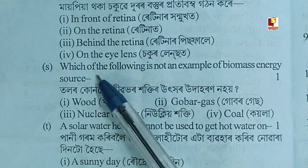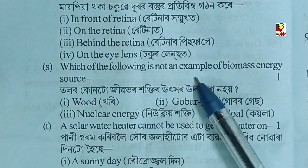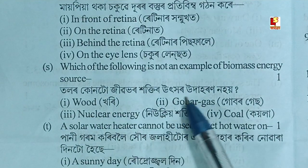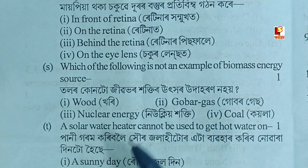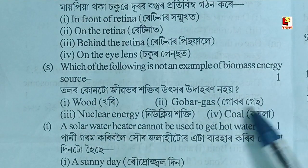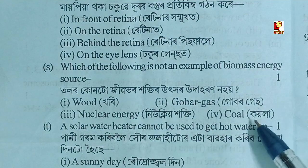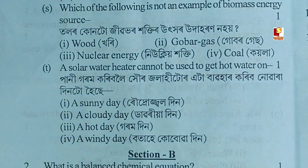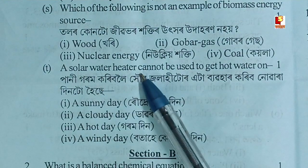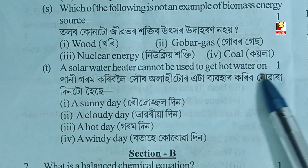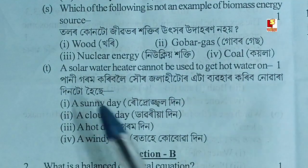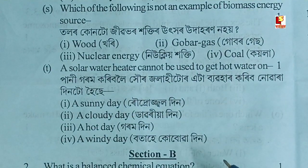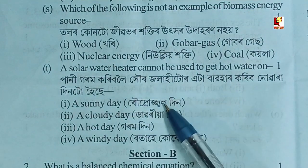Which of the following is not an example of a biomass energy source? Options include gobar gas and nuclear energy. A solar water heater cannot be used to get hot water on which type of day?